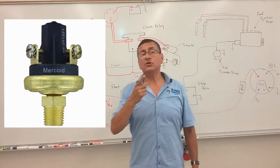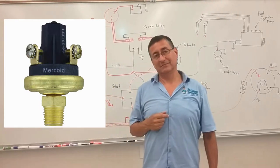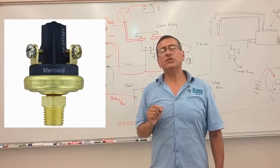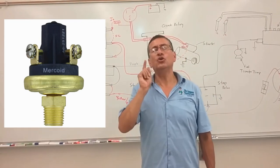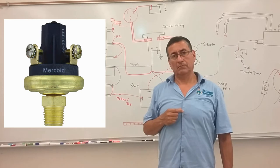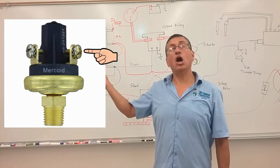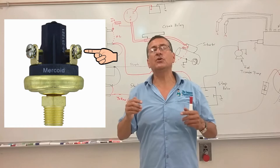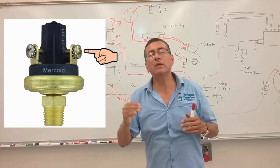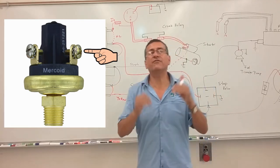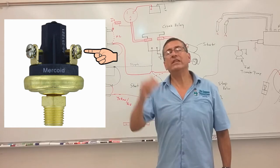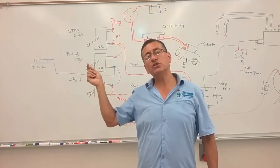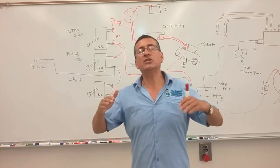The oil pressure switch is similar — it is also a normally closed switch. The contacts internally open only when the oil pressure decreases below the limit. Each manufacturer has a different limit. When the oil pressure decreases below the limit, the contacts in this switch open and the engine stops.